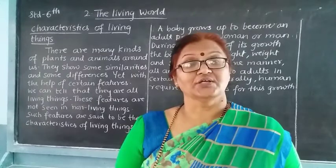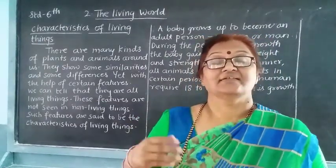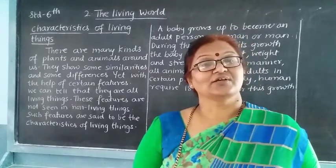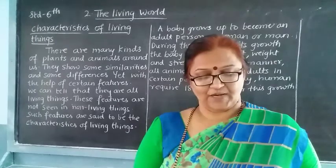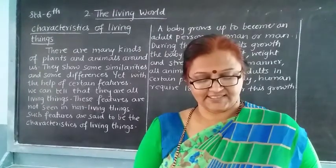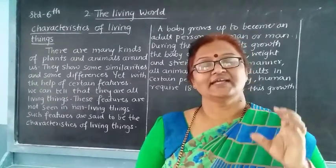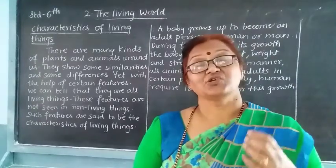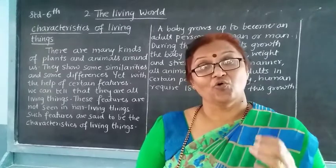Food is necessary for growth. When we eat food and take nutrients into our body, our body grows. Plants are one of the most important living things on the earth — they make their own food. Plants produce food from water, nutrients in the soil, and carbon dioxide present in the air. This process takes place in the leaves. Plants take carbon dioxide from the atmosphere and water and minerals from the soil, and in the presence of sunlight and chlorophyll, they prepare their own food.